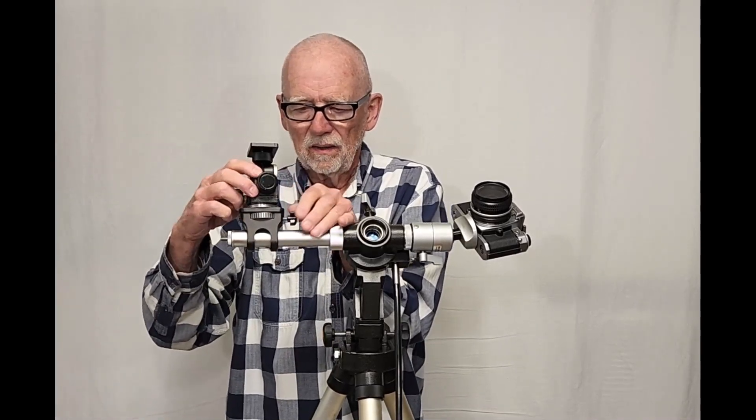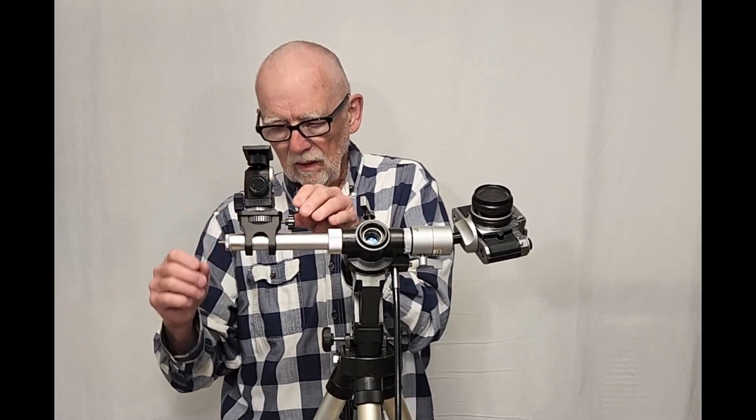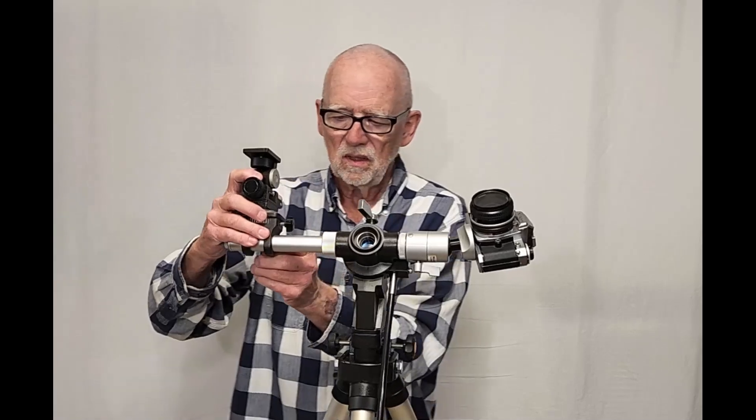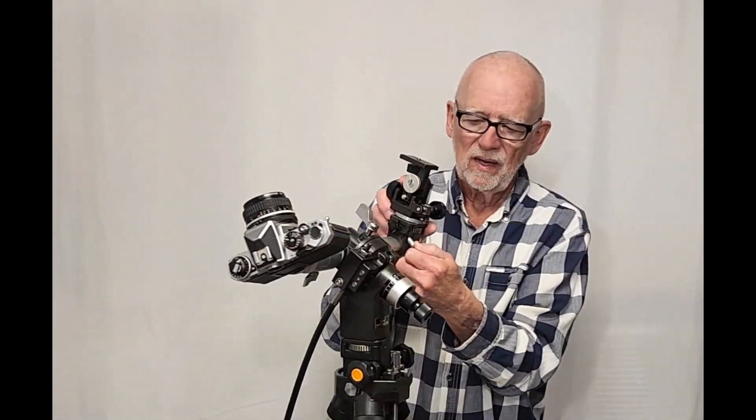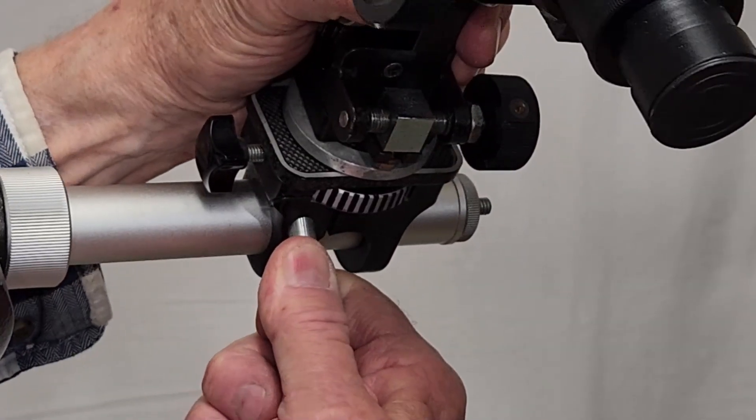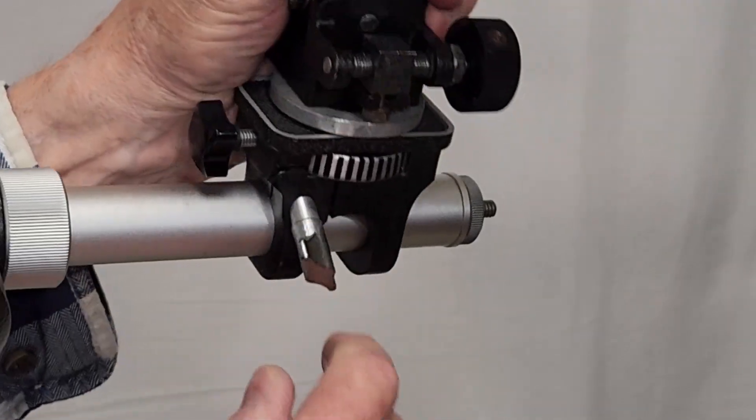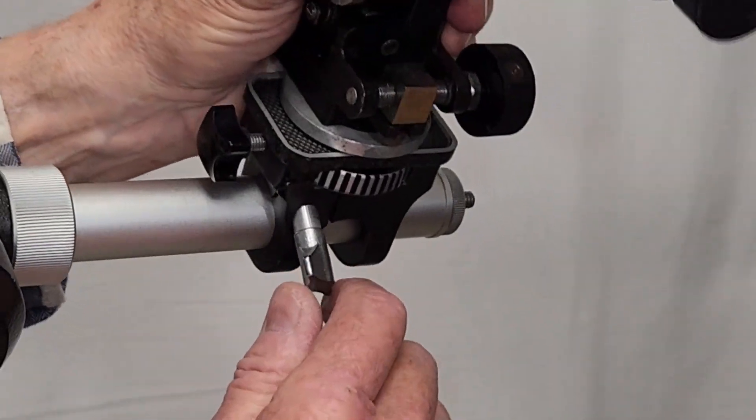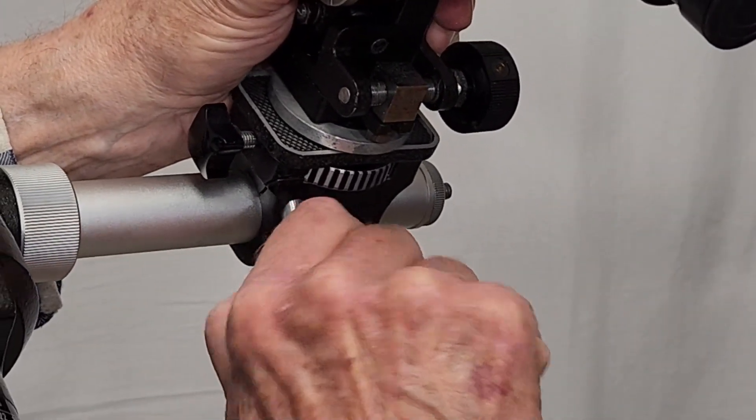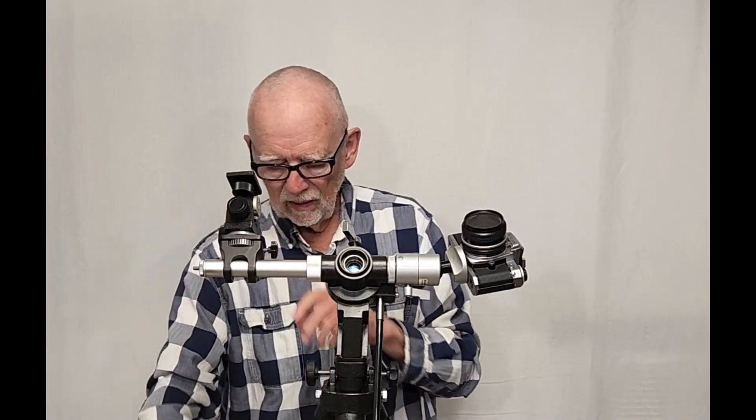So that goes on there, you can adjust it and this thing can be adjusted, this knob back here so you can loosen this and adjust this this way and that way. So now you can adjust this, tighten it down, put a little guide scope on here.